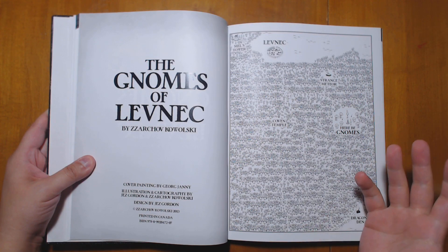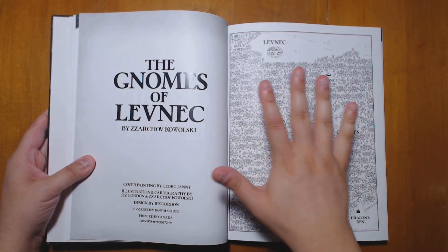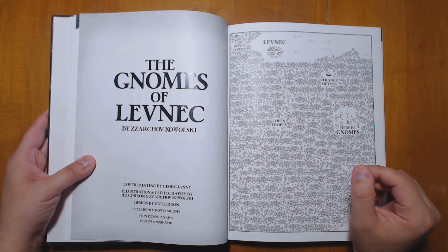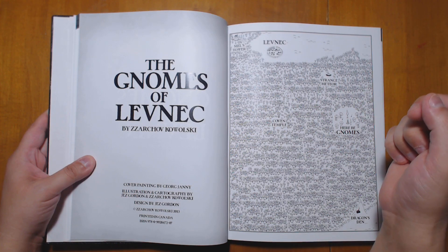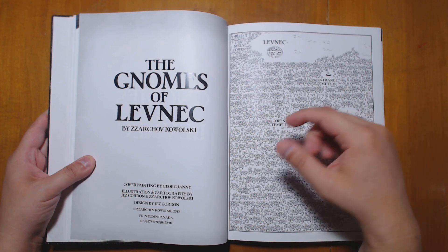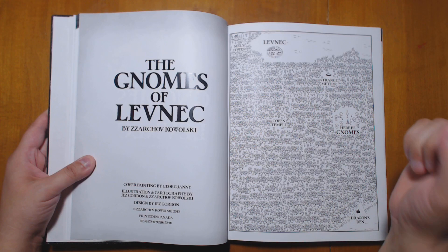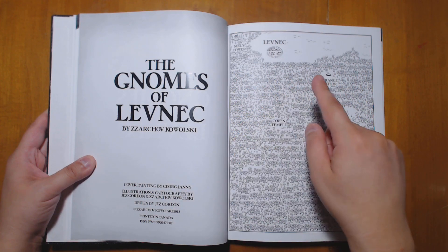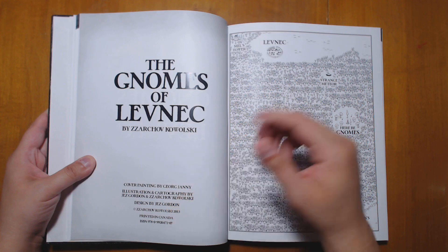Next, we have the Gnomes of Levnik, which is similar in structure in some ways. You have a town where things are getting weird. There has been a starvation there. By the way, I like how this map is at the front of it. It really helps me figure out what's going on. And there's been starvation. They've had a bad winter, and they've been turning to possibly cannibalism or eating gnomes.